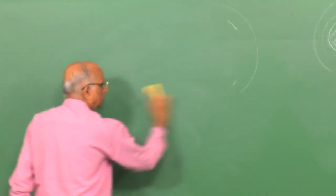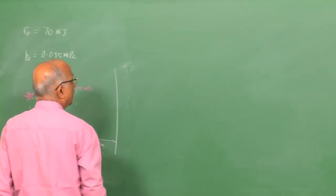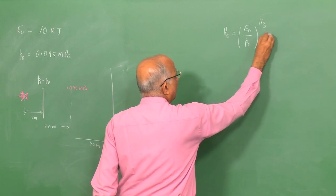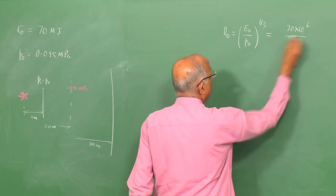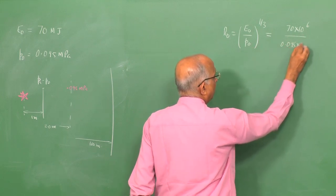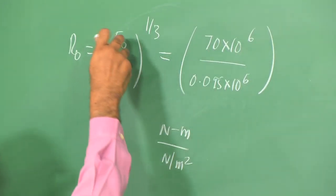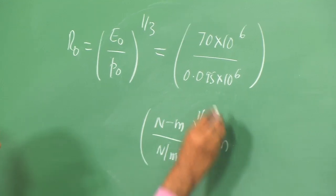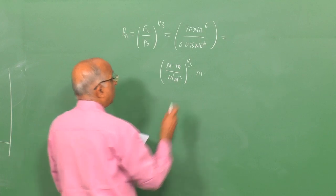First, calculate the explosion length: R0 = (E0/P0)^(1/3) = (70×10⁶ J / 0.095×10⁶ Pa)^(1/3) = 9.03 meters. At Rs = 1 m, the scale distance Rs/R0 = 1/9.03 ≈ 0.11. Since this is less than 0.3, we are in the strong blast region and can use the strong blast equation.